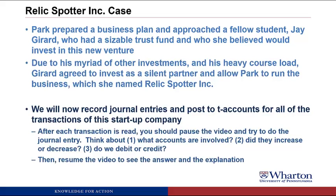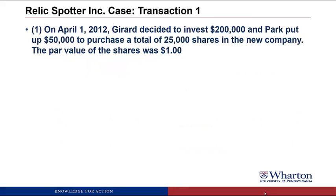After each transaction is read, you should pause the video and try to do the journal entry. Think about what accounts are involved, did they increase or decrease, and then do we debit or credit. Then resume the video to see the answer and the explanation, and that's when we'll post the journal entry to T-accounts. First transaction: on April 1, 2012, Gerard invested $200,000 and Park put up $50,000 to purchase a total of 25,000 shares in the new company. The par value of the shares was $1.